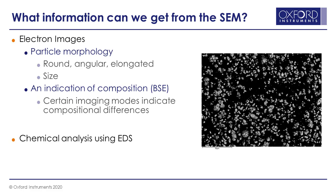We can create electron images using the SE or BSE detectors — secondary electron or backscatter electron detectors — giving us information about particle morphology: shape, size, and distribution. The backscatter detector is also sensitive to atomic contrast, so density variations. Based on the gray levels in the image, we can get indications about compositional differences. And if we use EDS — energy dispersive spectroscopy — we can analyze the X-rays coming off the sample and quantify those compositional differences that we see in the backscatter image.